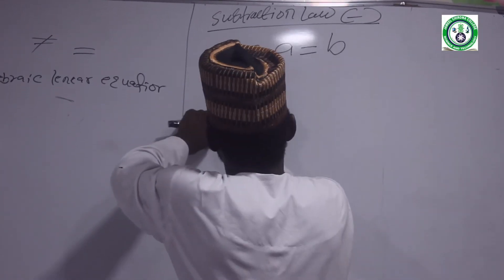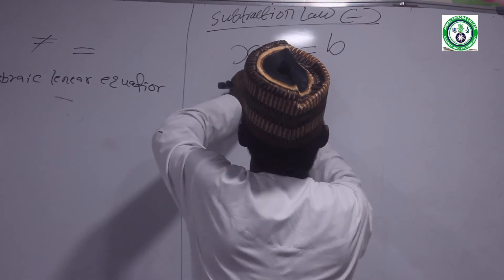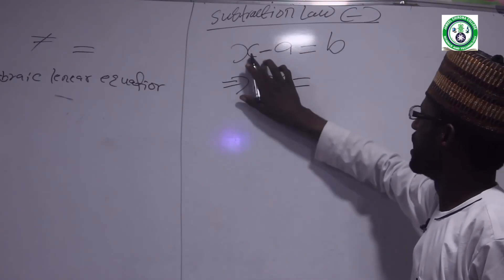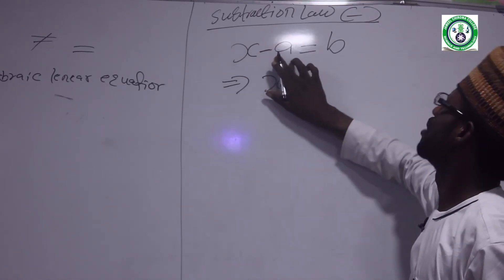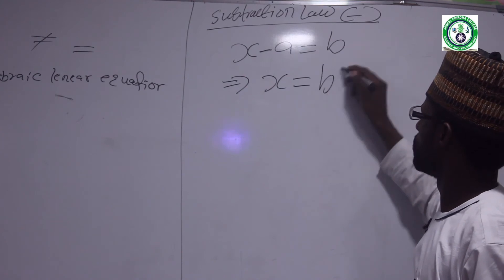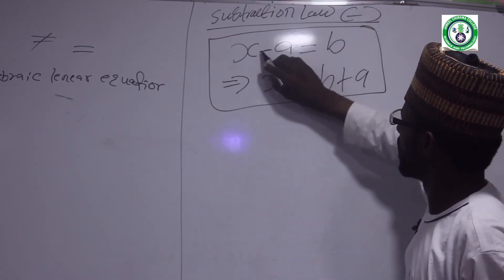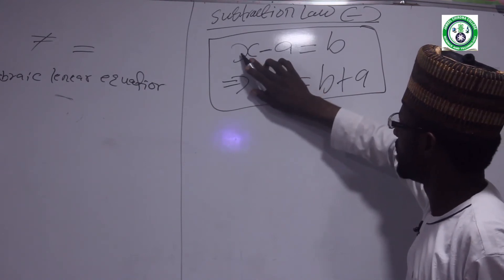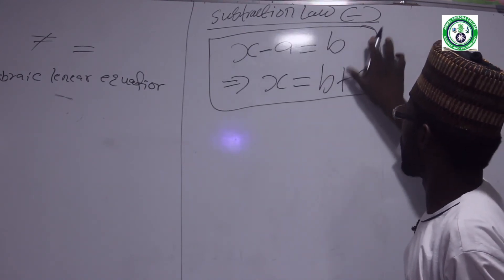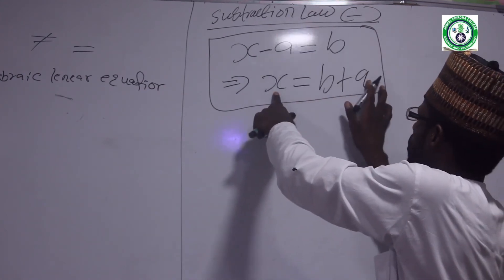For subtraction: subtract A from x, move it to the right. Minus A becomes plus A on the other side. So x minus A gives: x equals B plus A. That is how we isolate x — minus A moves across and becomes plus A.